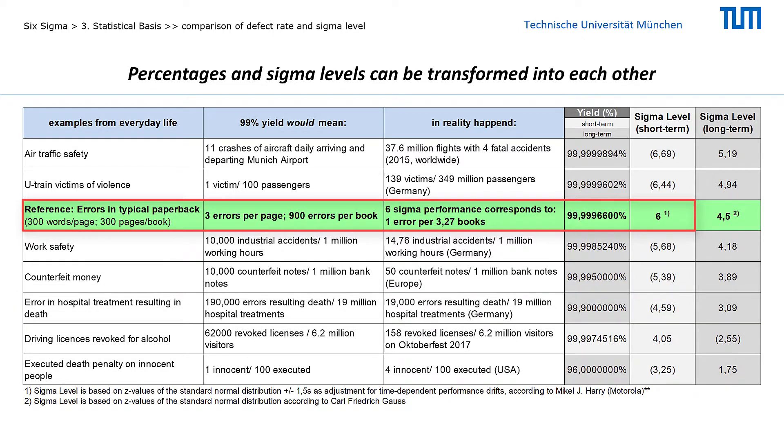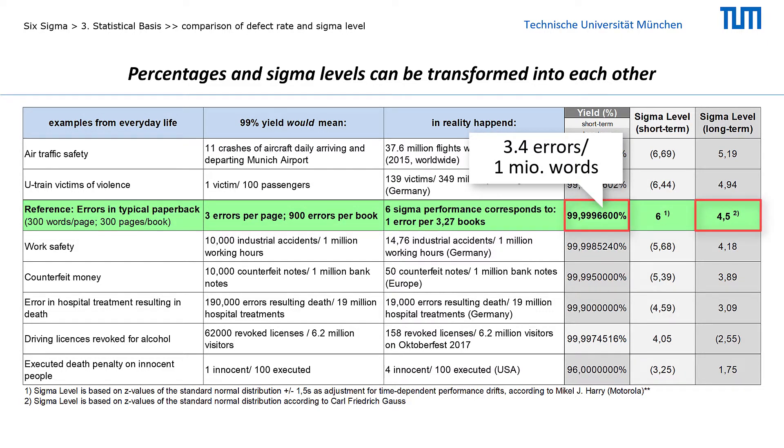My reference example uses a typical paperback book with 300 words per page and 300 pages per book, to show the standard example for short-term six sigma, with 3.4 errors per 1 million words, i.e. 1 error in 3.27 books. This performance level would have to be adjusted to 4.5 sigma, if the long-term performance is to be estimated.